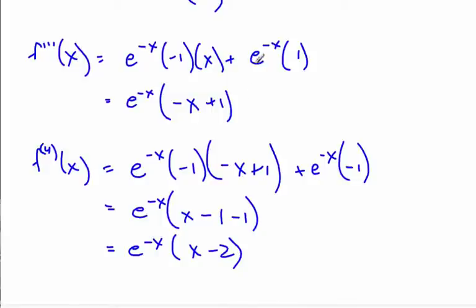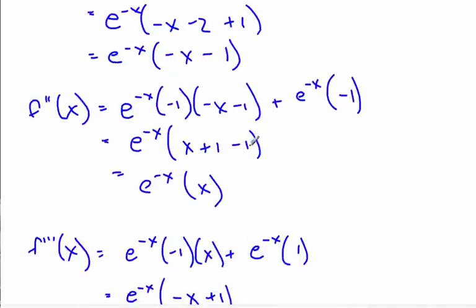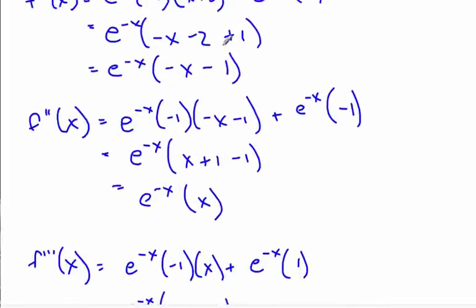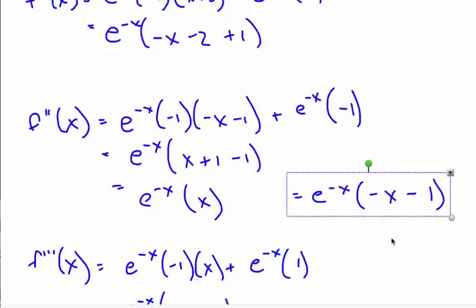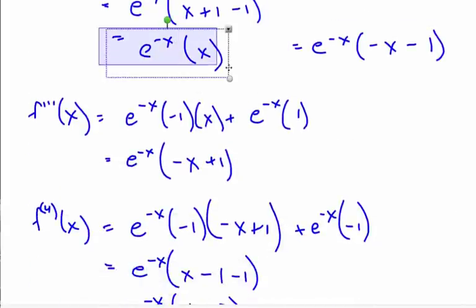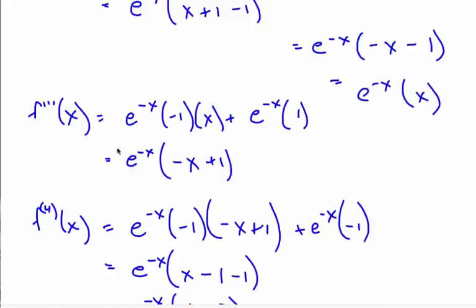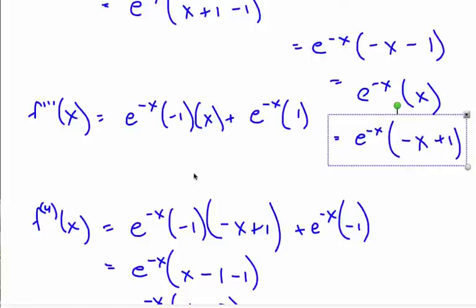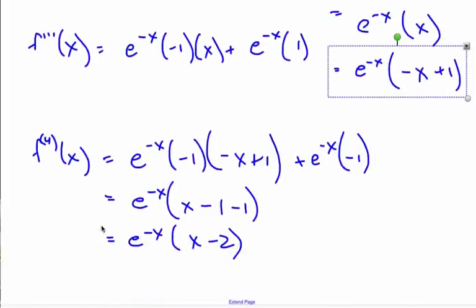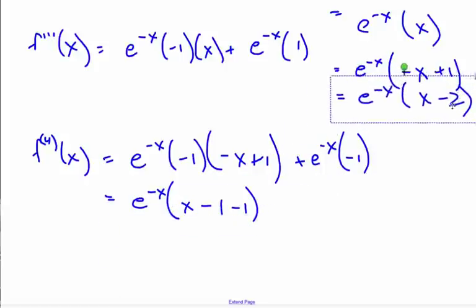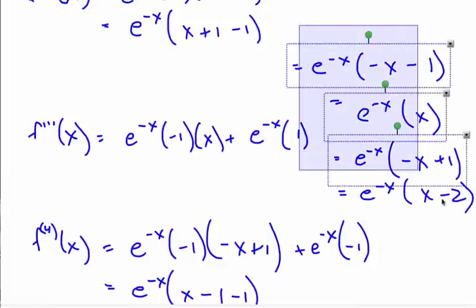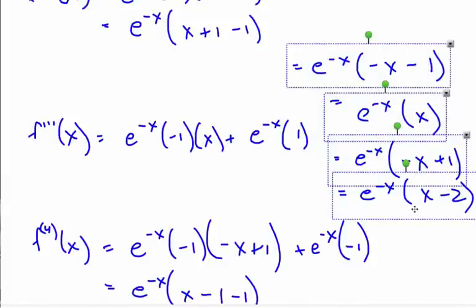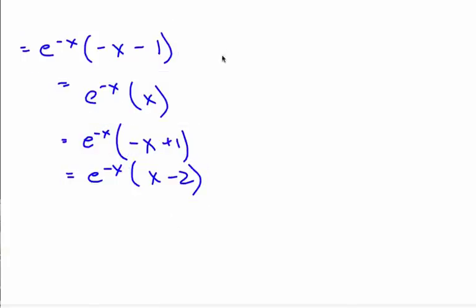Now let's put all four derivatives together on a new page. Looking at them, I notice the x coefficient is alternating: negative x, positive x, negative x, positive x. And the constant term is going negative 1, nothing, plus 1, and then negative 2. There's clearly a pattern emerging here.